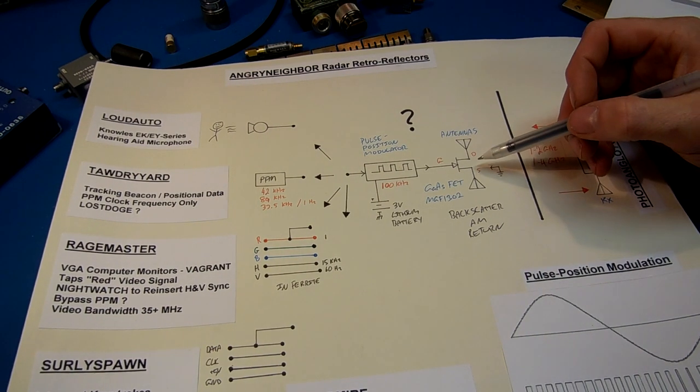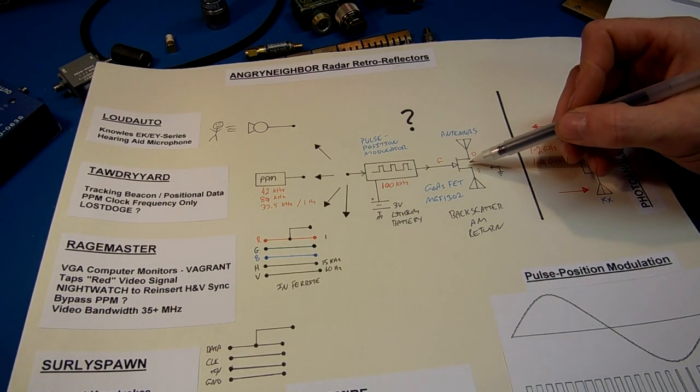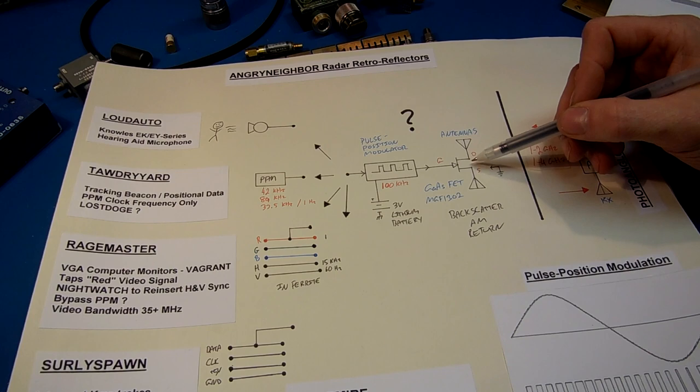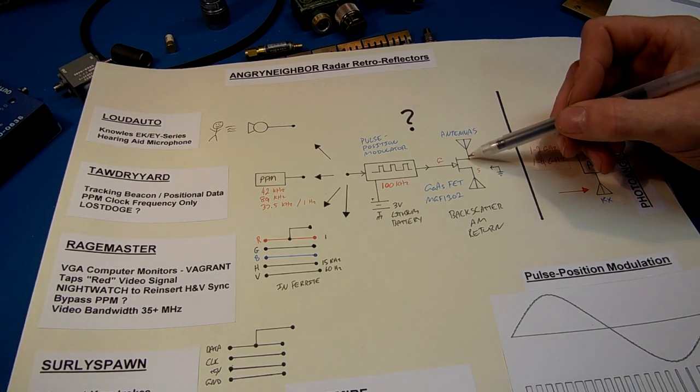You can also use diodes. But since a diode is a non-linear device, it will create harmonics. But by using the FET, they can reduce the number of harmonics created.